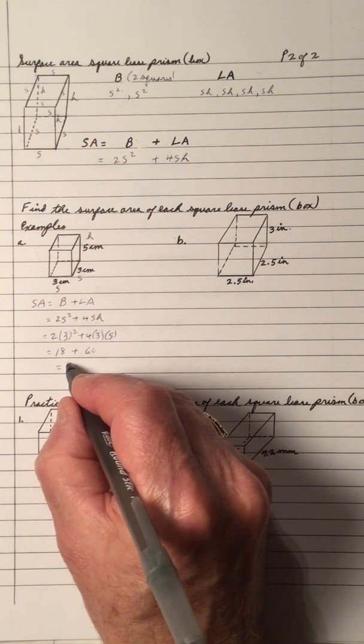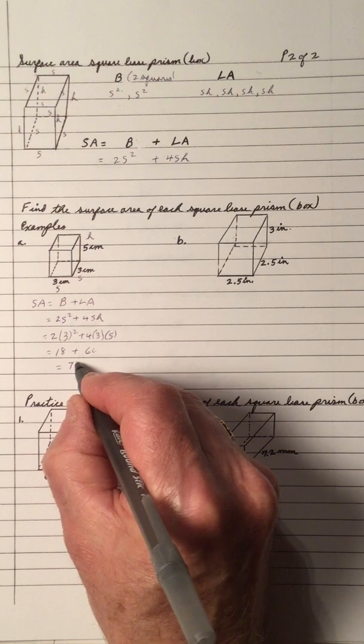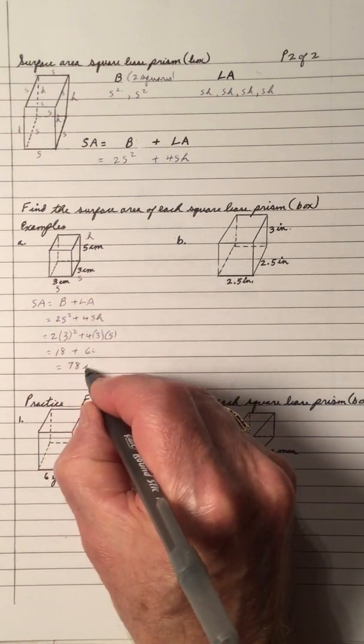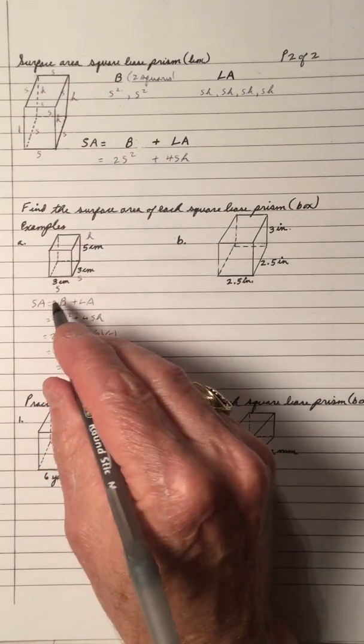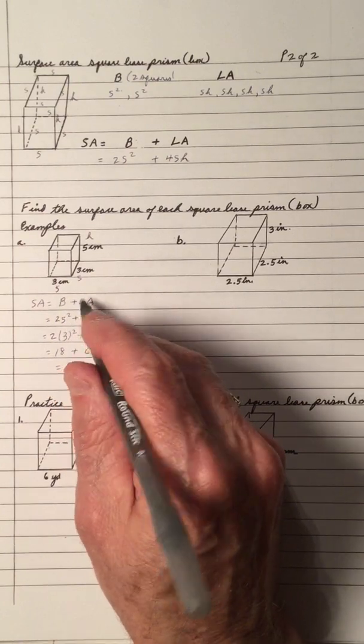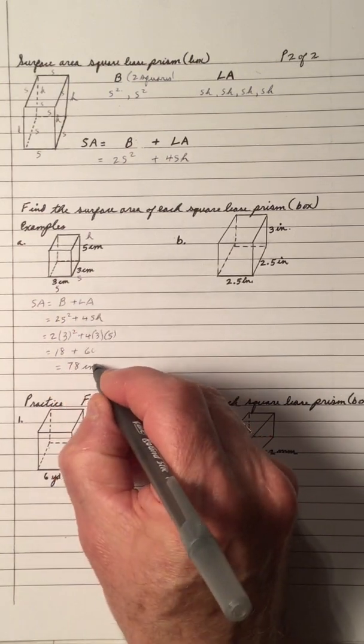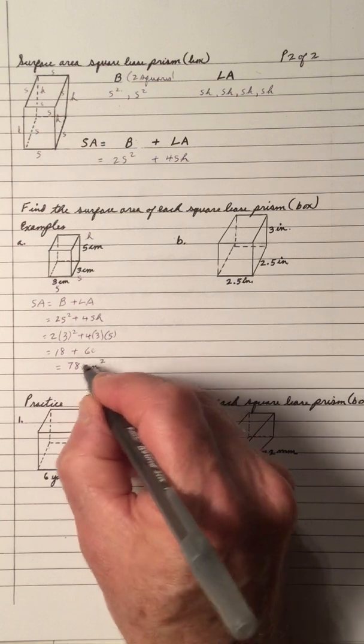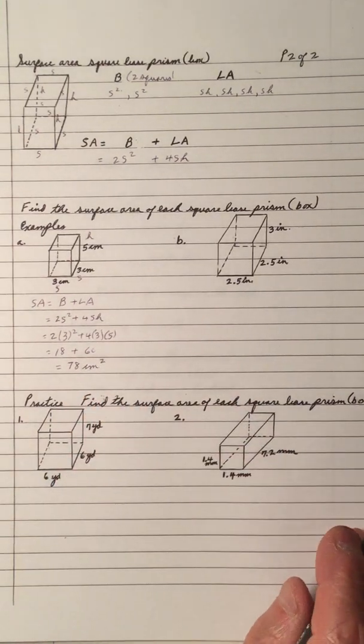And you get 12 times 5 is 60. So the total area is 78, and it's total volume, sorry, I'm working on the surface area. So it's 78 square centimeters.